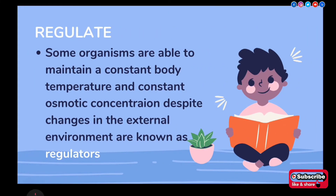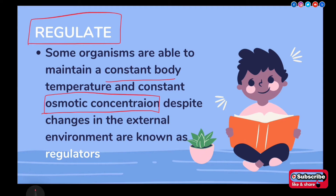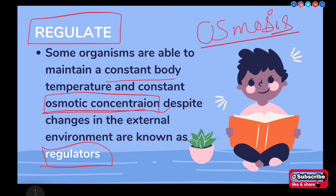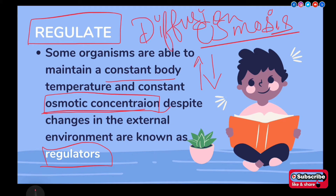First, we have the term 'Regulate'. Some organisms are able to maintain a constant body temperature and constant osmotic concentration despite changes in the external environment — these are known as regulators. Osmotic concentration relates to osmosis, which involves the exchange of substances by the process of diffusion.